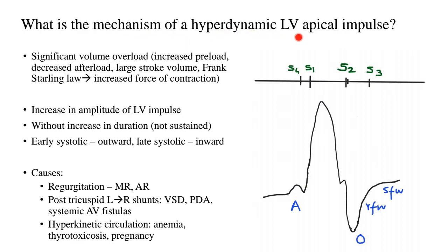What is the mechanism of a hyperdynamic LV apical impulse? For a hyperdynamic apical impulse to be produced, the person needs to have significant volume overload — meaning preload is increased — along with a condition of decreased afterload. There will be a large stroke volume because of this increased preload and decreased afterload, and Frank Starling's law is in play, resulting in increased force of contraction. Basically, there is an increase in the amplitude of the LV impulse — it looks taller than usual. There is no increase in the duration of the impulse.